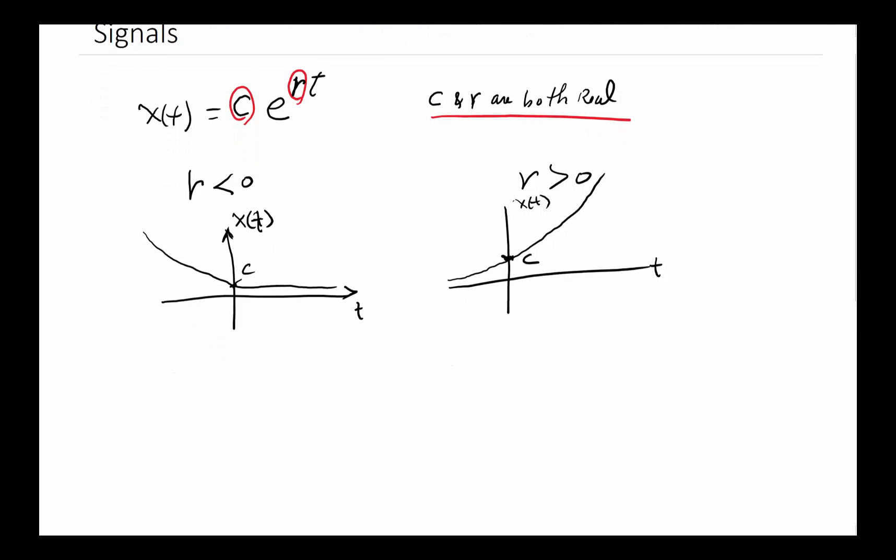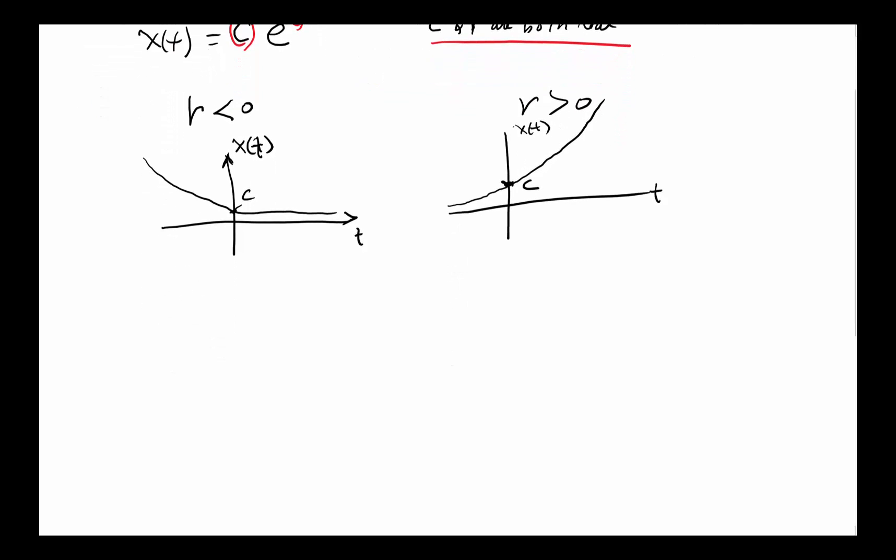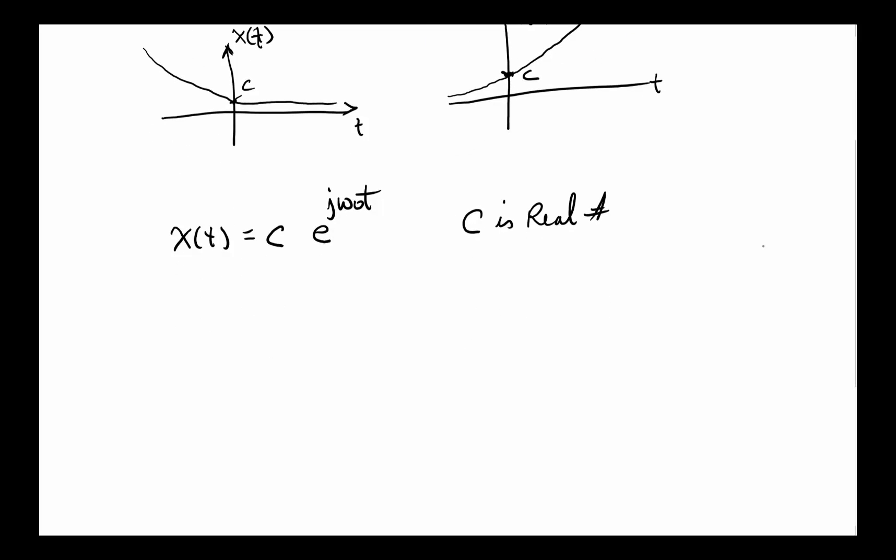Let's make it a bit more interesting, or closer to reality. Now we've got x(t) equals c e^(jω₀t). Omega zero is what we call the natural frequency - we've talked about that before, and it's just a number, but there's a j in front of it, which makes the power of e a complex number. Let's assume that c is still a real number.